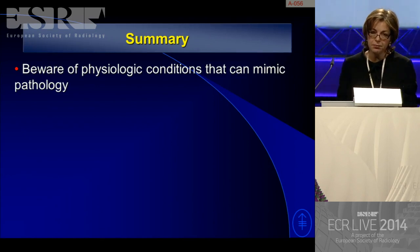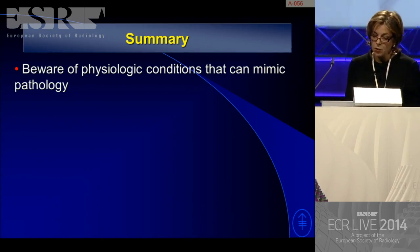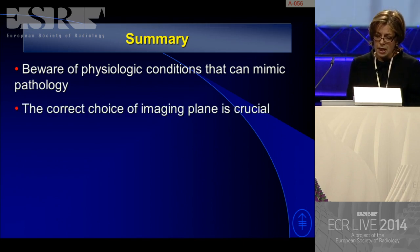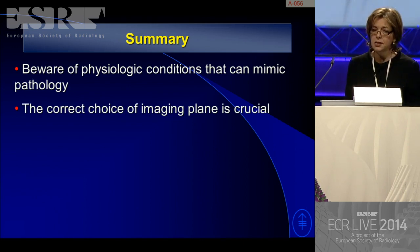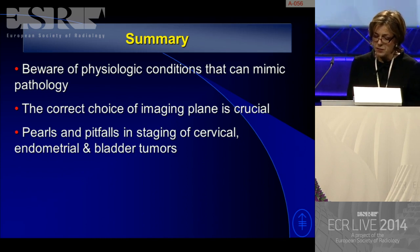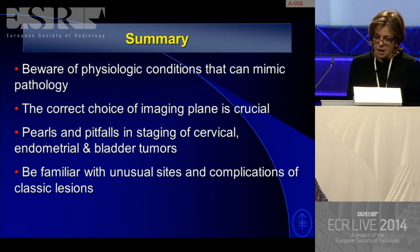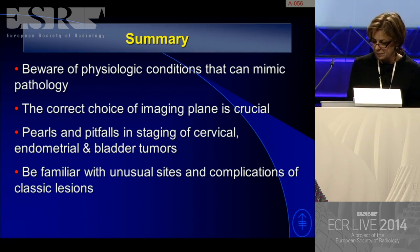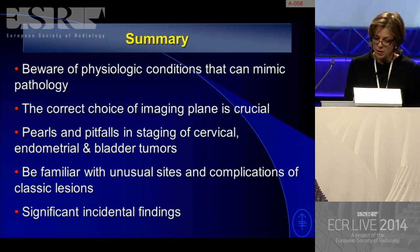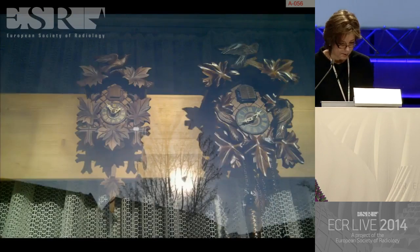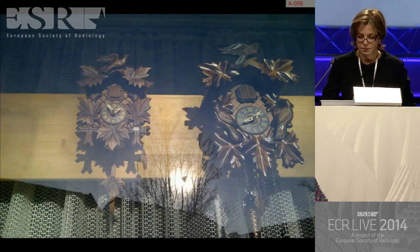In summary: be aware of physiological conditions that can mimic pathology, as over-calling pathology is a real risk. The correct choice of imaging plane is crucial, especially when evaluating uterine anomalies and staging endometrial and cervical cancers. Be familiar with unusual sites and complications of classic lesions — such as abscess arising from an endometrioma. And always be alert to significant incidental findings, as these may have greater clinical impact for the individual patient. Thank you very much.